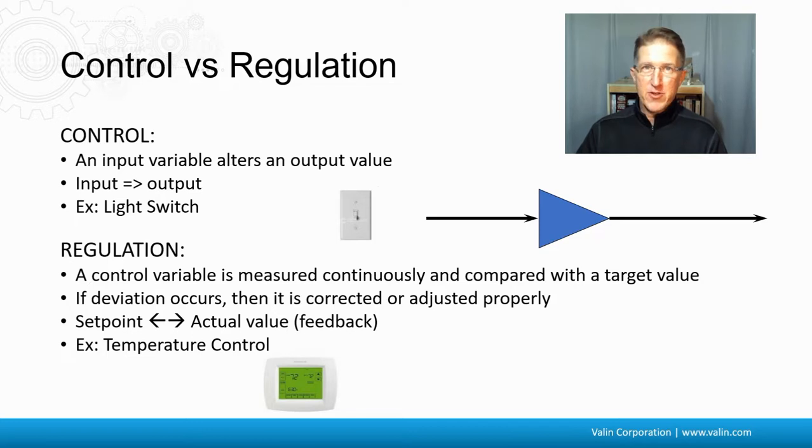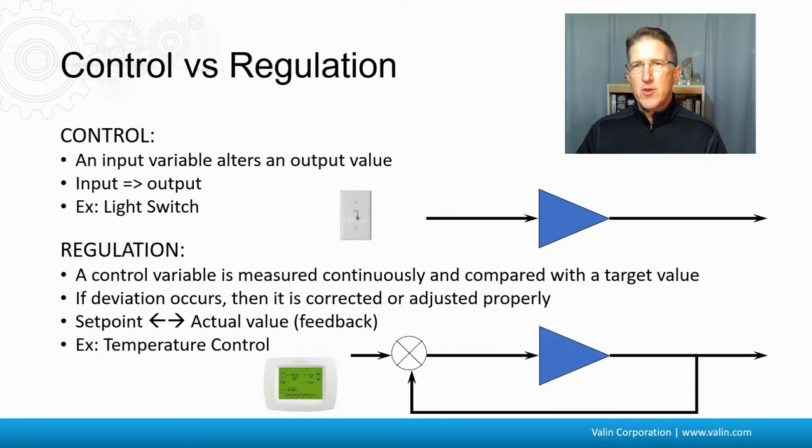So if there's something wrong and there's an error, a deviation occurs, it's corrected or adjusted properly. So you have a set point and then you have an actual value and you have feedback coming back to it, like temperature control. So that's where you have an input, you have an output, you have feedback that makes the input adjust itself.